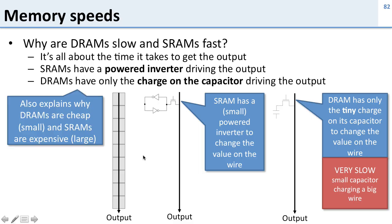This also explains why DRAMs are cheap and small, and SRAMs are large. Making this circuit is enormously larger than just making this capacitor. So if I want a lot of SRAM, it's going to take up a lot of space in my chip, and it's going to be an expensive chip.